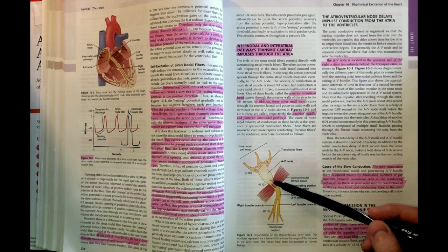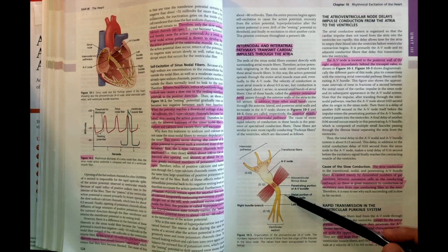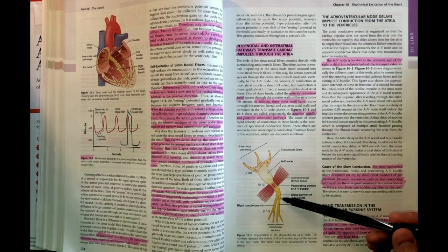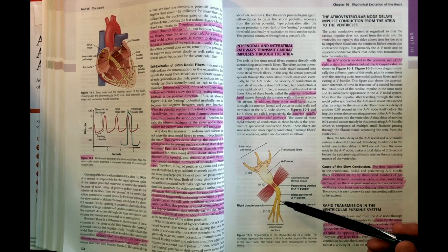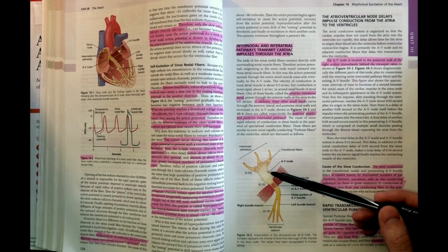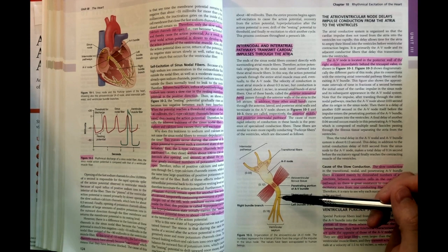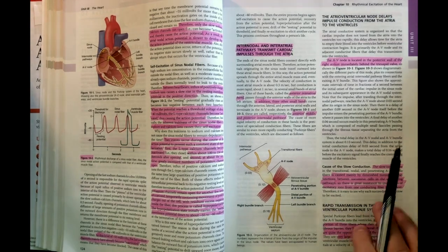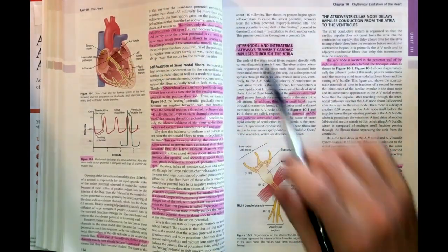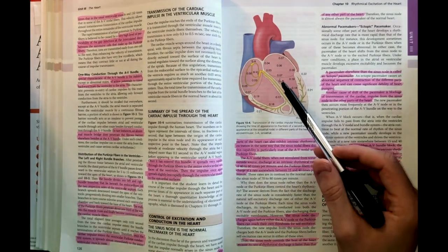The AV node functions to slow the impulse—there's a traffic jam here because of reduced gap junctions and higher resistance, slowing the impulse until we reach the bundle branches or Purkinje fibers, where it turns back into a highway. You can think of it as two highway systems separated by traffic jams or traffic lights, which prolongs the impulse so the atrium can fill the ventricles with blood. Then the Purkinje fibers send the impulse around the left and right side of the heart so the entire ventricular muscle contracts as one.